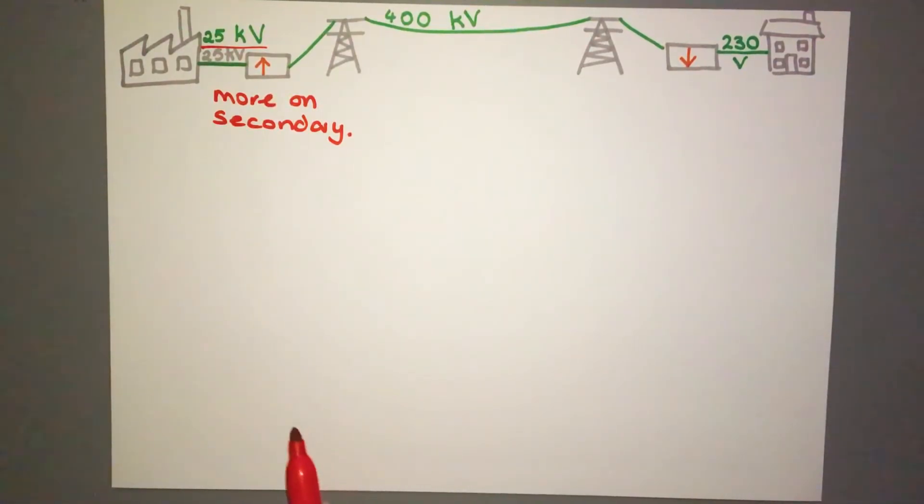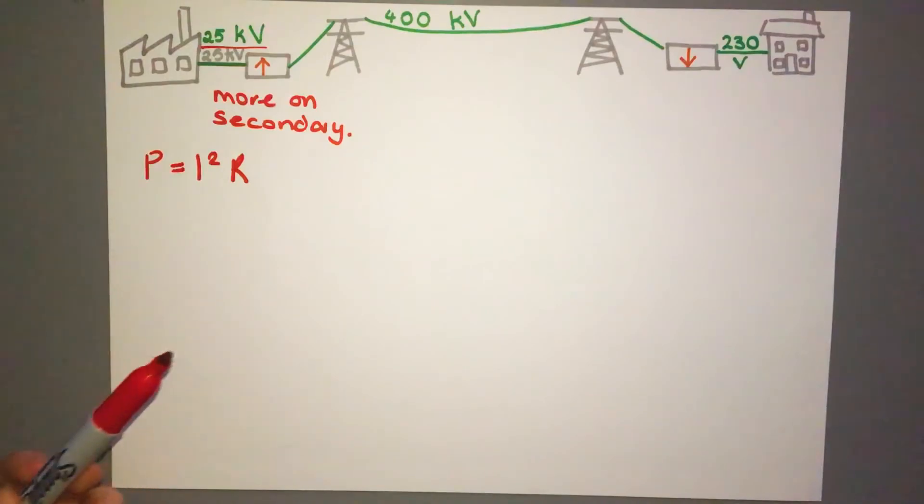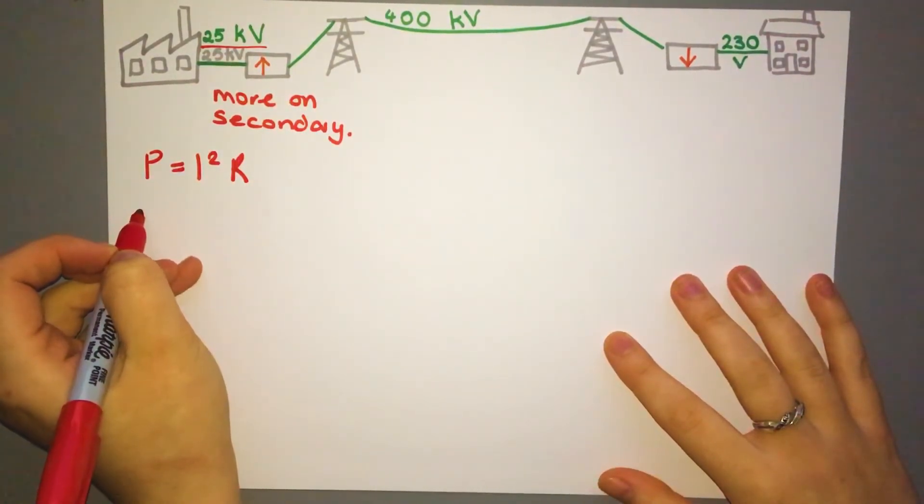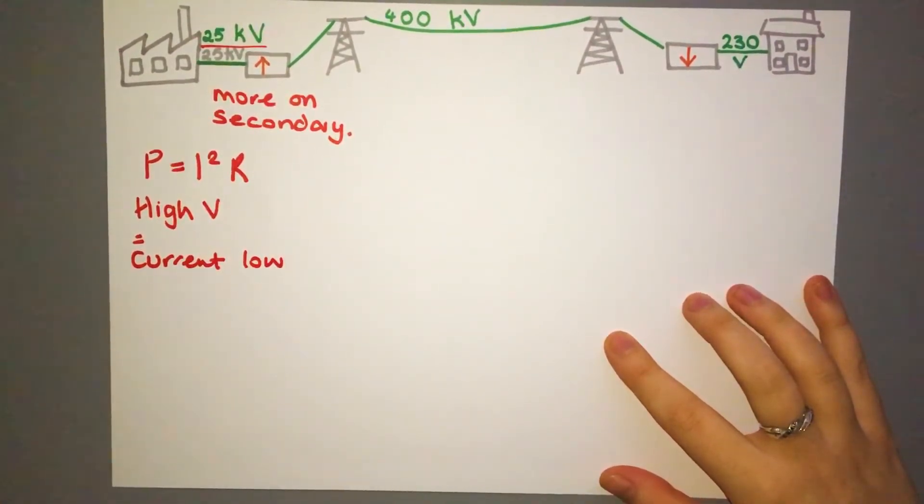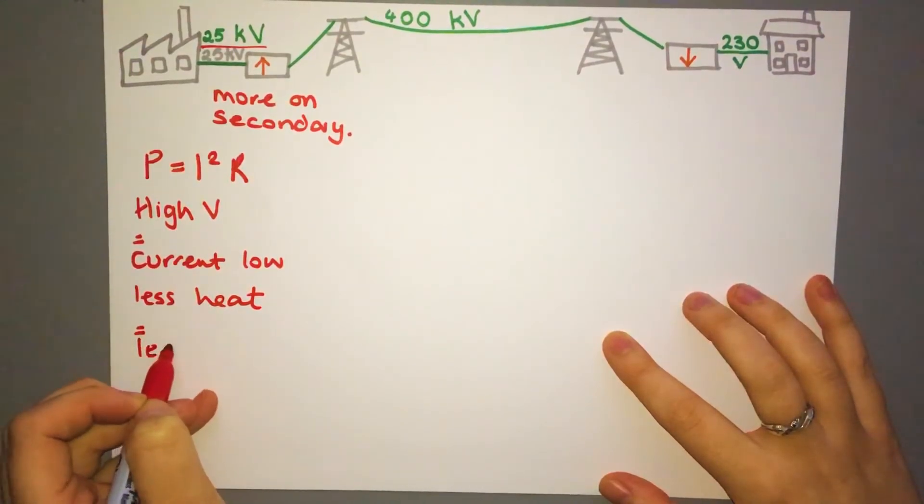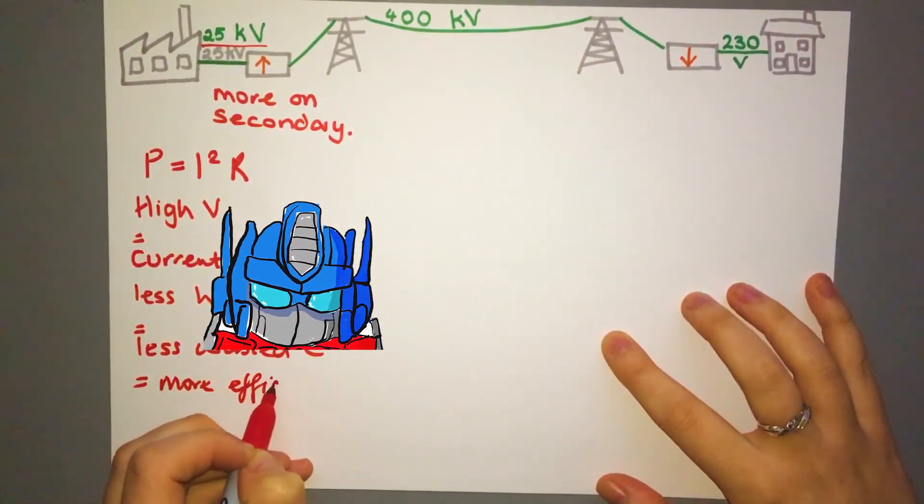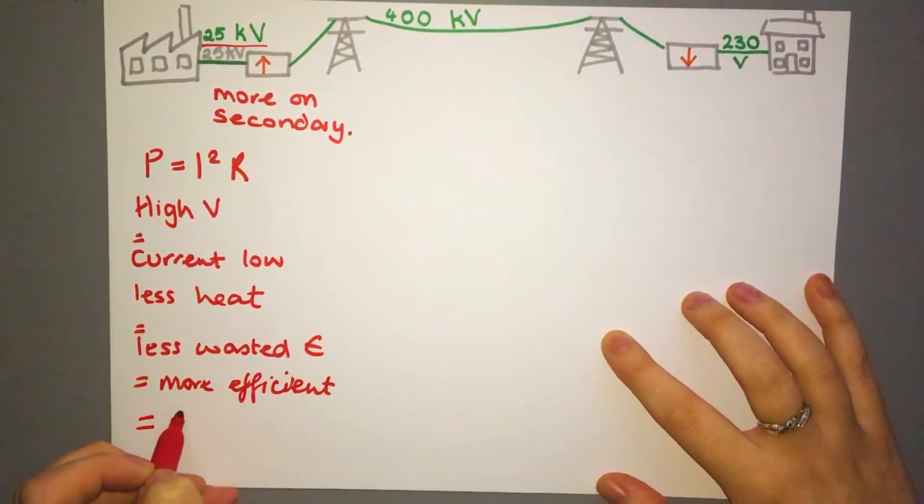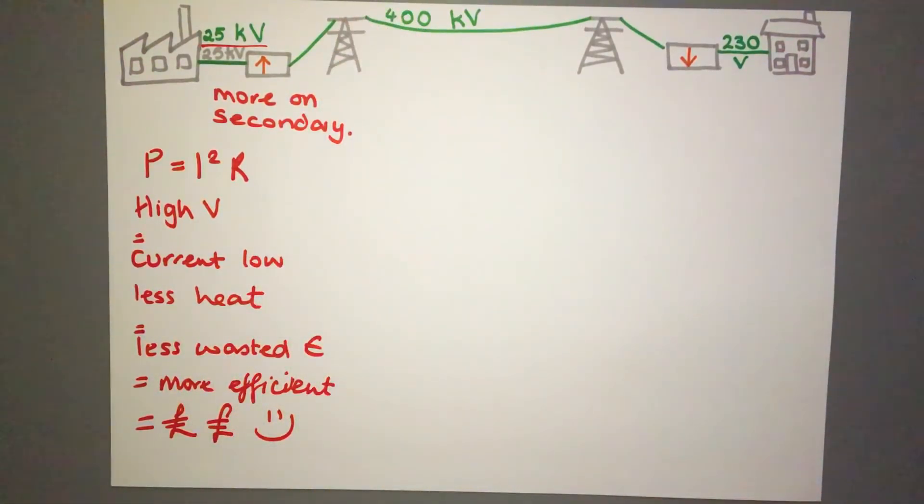And the reason for that is if we step it up using the equation for power P equals I squared R, if my power needs to stay constant and we're trying to reduce the amount of resistance, if my voltage is going up then my current is going to go down. So if I've got a lot smaller current then therefore my resistance is going to be lower, I'm going to lose less heat. So if your voltage is high that means your current's low. So if that's the case it's really good because less heat, if there's less heat then it's less wasted energy, if you've got less wasted energy it's more efficient, and if it's more efficient it means we save money and it means we don't get too hot. So it's all good, everyone's really happy about it.